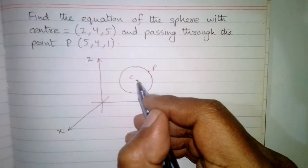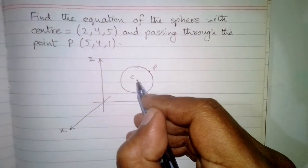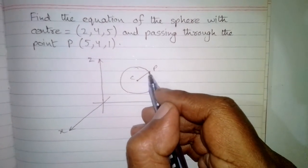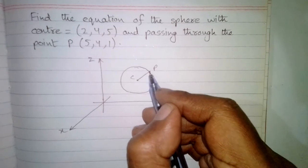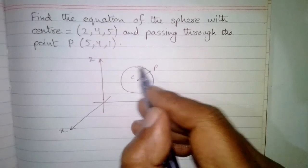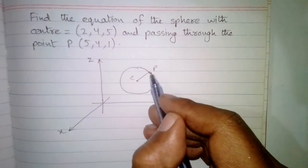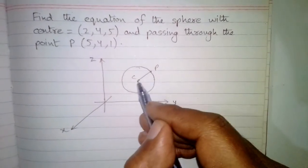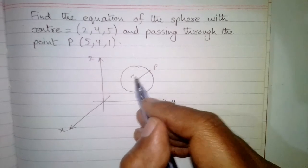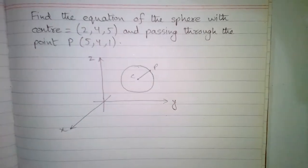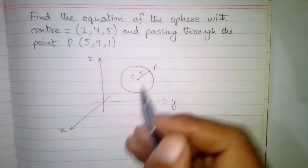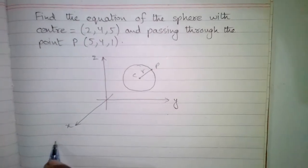The radius of the sphere is the distance between the center and the point on the surface of the sphere. So we will find the distance between C and P, and this is the radius of the sphere.